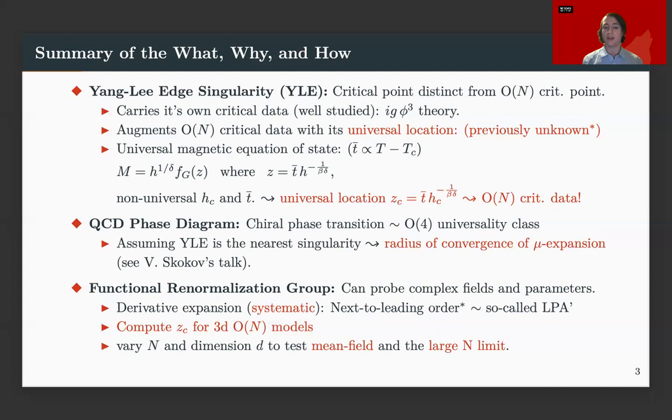And from here, we want to compute zc for 3D O(N) models. But furthermore, the FRG, the functional renormalization group, allows us to vary in the dimension D. So we can additionally test mean field, the mean field limit, and the large N limit.